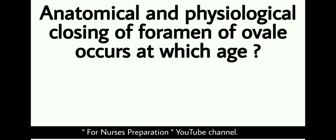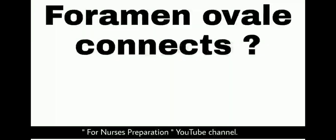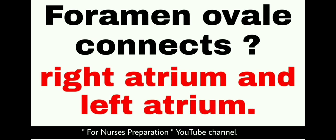Anatomical and physiological closing of foramen ovale occurs at which age? Anatomical closing of foramen ovale occurs just 5 minutes after birth, whereas physiological closing occurs after 1 year of birth. Which structures are connected by the foramen ovale? Foramen ovale connects the right atrium and the left atrium.